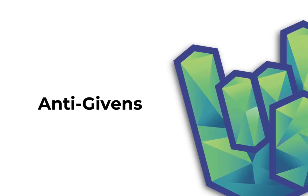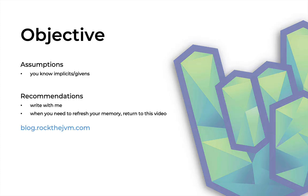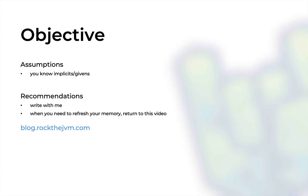Hello boys and girls, welcome back to Rock the JVM. I'm Daniel and in this video I'm going to show you a trick with givens in Scala 3. This video is called anti-givens because you can use the absence of givens to produce some interesting results. I recommend that you become familiar with how implicits or givens work in Scala 3 — I have a bunch of videos here on the Rock the JVM channel if you want to check those out — and write some code with me in this video as usual.